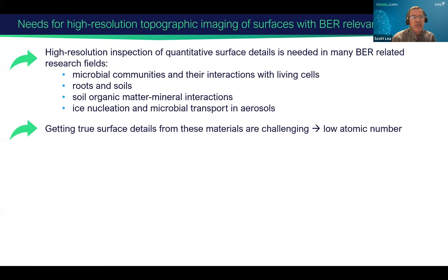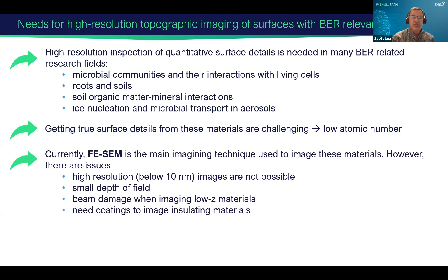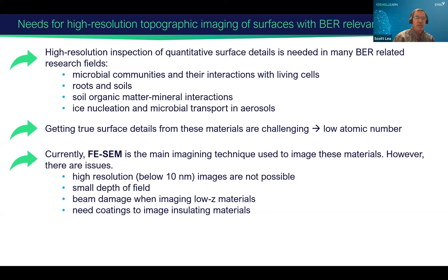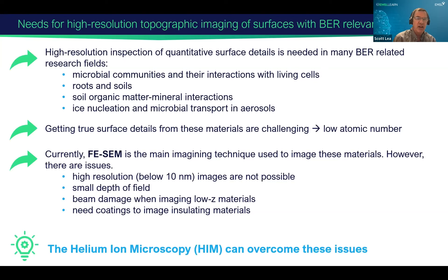There's a challenge of getting this imaging information because a lot of these materials have low atomic number — carbon, nitrogen, oxygen. Typically people use SEM to image these materials. However, there are issues: high resolution images are generally not possible below 10 nanometers, there's generally small depth of field which gives difficulty in doing three-dimensional perspectives, there's a lot of beam damage to materials, and you generally need coatings to image insulating materials.